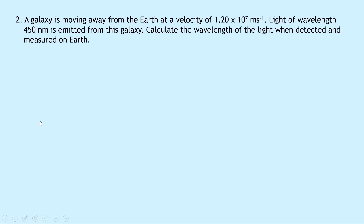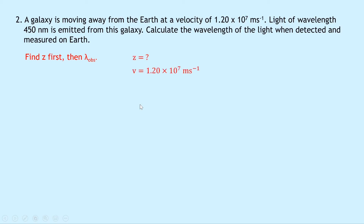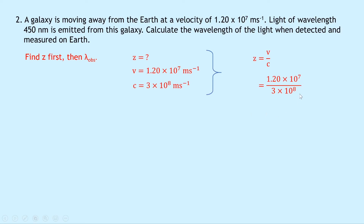Question 2 says that a galaxy is moving away from the Earth at a velocity of 1.20×10⁷ meters per second. Light of wavelength 450 nanometers is emitted from this galaxy. Calculate the wavelength of the light when detected and measured on the Earth — that is, find the observed wavelength lambda OBS. The strategy is to first find z, then lambda OBS. Using z equals v over c: 1.20×10⁷ divided by 3×10⁸ gives z equals 0.04.